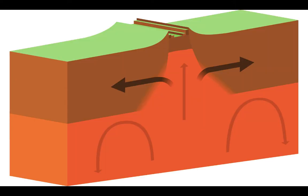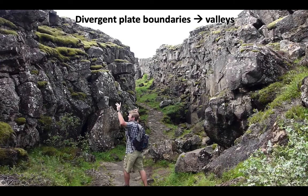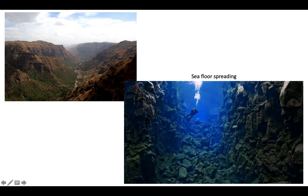Here's another diagram showing the same thing. Here's an example of a divergent plate boundary where we've got a lot of valleys forming. And you can see some seafloor spreading going on here and some land sort of being torn apart over hundreds of millions of years to form valleys.